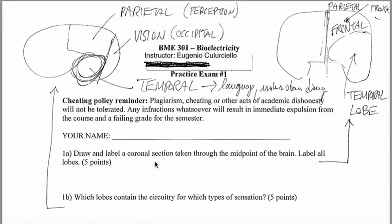First we will examine the first question. Draw and label a coronal section taken through the midpoint of the brain and label all lobes that you can remember. So, this is the section that we need to draw. It is sort of in the middle of your brain on the plane of your body, basically. Taken at the midpoint. So, in this area here you will have the temporal lobe and on the top part you will have part of the parietal and part of the frontal lobe.